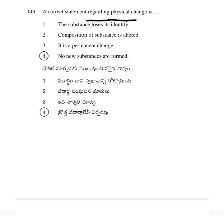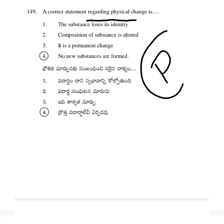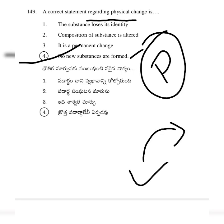The correct statement regarding physical change is option 4: no new substances are formed. In a physical change, the matter undergoes changes but no new substances are produced.